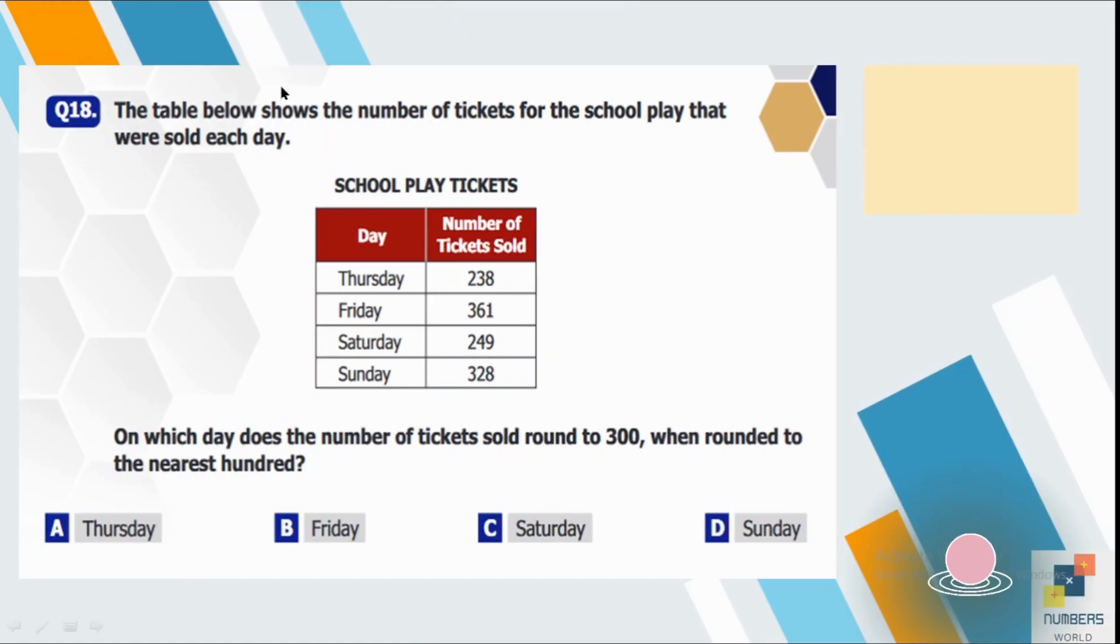Question number 18. The table below shows the number of tickets for the school plates that were sold each day. So on which day does the number of tickets sold round to 300 when rounded to the nearest 100. So you can see the number is 238, which lies between 200 and 300, but it is less than 250. So it will be rounded as 200. 361 lies between 300 and 400, but it's greater than 350. So it will be rounded towards 400. So similarly, the Saturday's number is 249, which will be rounded as 200. And Sunday's number is 328, which is closer to 300. So Sunday is our correct answer.